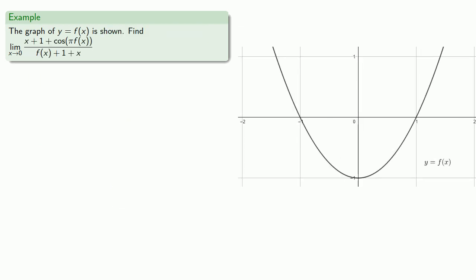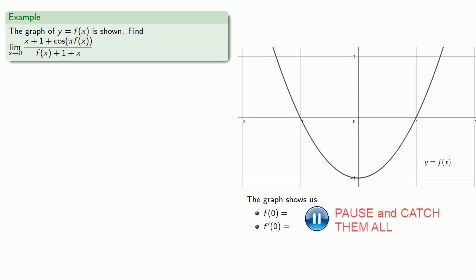We can also compose our functions. Let's say we have the graph of y equals f of x, and let's find the limit as x goes to 0 of this expression. Since this is a graph of y equals f of x, we can read some information off the graph directly. We're interested in what happens when x equals 0, so we find f of 0 and f prime of 0: negative 1 and 0.